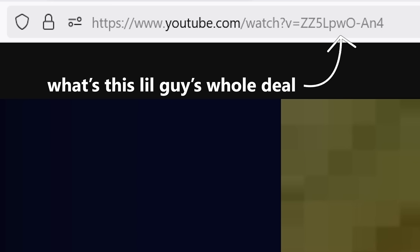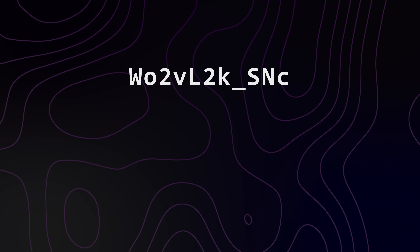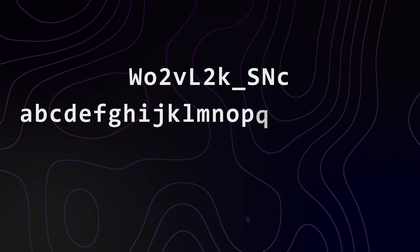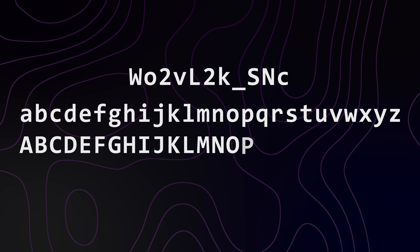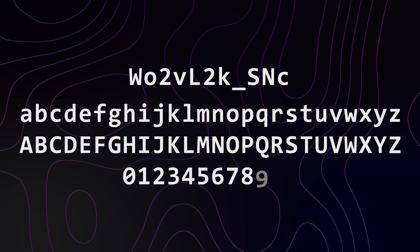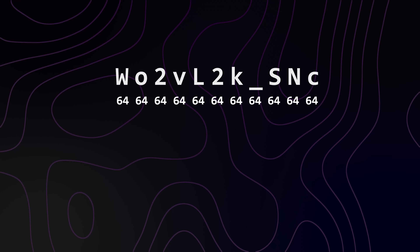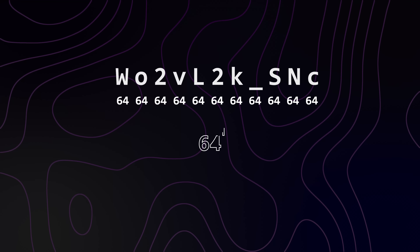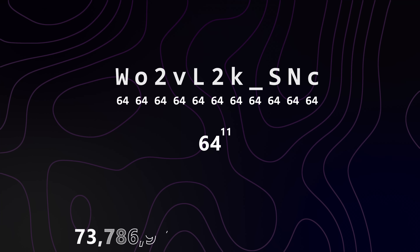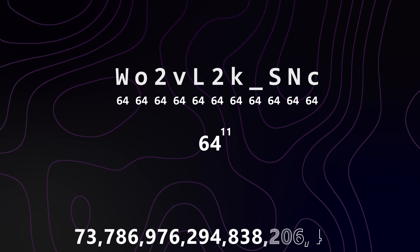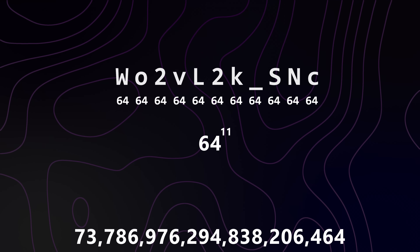Let's look at the structure of YouTube video IDs — they're actually pretty simple. They're 11 characters long and contain all letters A through Z, lower and uppercase, as well as the digits 0 through 9, and dash and underscore. That's 64 characters in 11 different positions, which is 64 to the 11th, or more than 73 quintillion total possibilities.